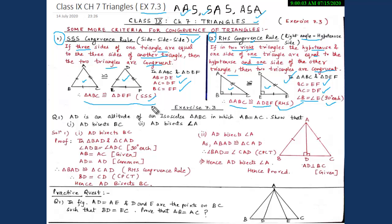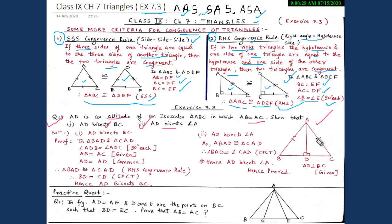Our first question: AD is an altitude of an isosceles triangle ABC in which AB equals AC. We have to show that AD bisects BC, and in the second part, AD bisects angle A. Since a figure is not given, we draw isosceles triangle ABC where AB equals AC, and AD is the altitude, meaning AD is perpendicular to BC.